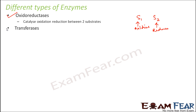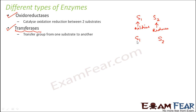The next type is transferases. The name itself says they transfer something. They transfer a group from one substrate to another. If we have two substrates S1 and S2, and a group is attached to S1, these enzymes will transfer that group from S1 to S2. Such enzymes are called transferases.